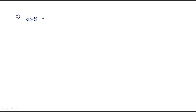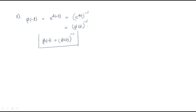The third property: taking phi(minus t) — similar to the second formula, substituting minus t — it becomes e^(A times minus t), which equals (e^(At))^(minus 1), which equals phi(t) whole inverse. Therefore, phi(minus t) equals phi(t) whole inverse. This is another important formula.